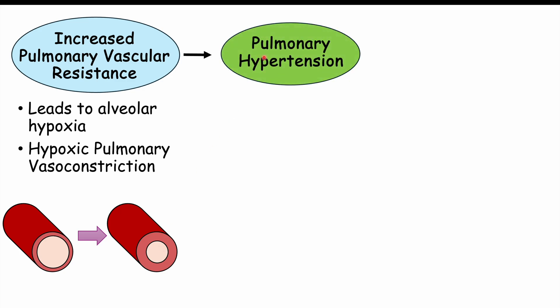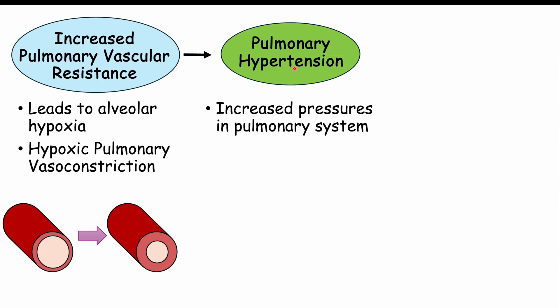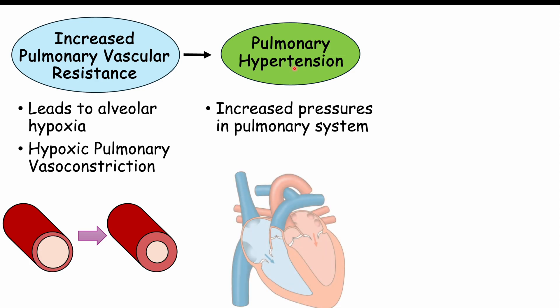Over time, increased pulmonary vascular resistance can lead to pulmonary hypertension — high blood pressure within the pulmonary system. This is distinct from systemic hypertension measured with a blood pressure cuff on the arm; pulmonary hypertension refers specifically to increased pressures in the pulmonary vasculature.